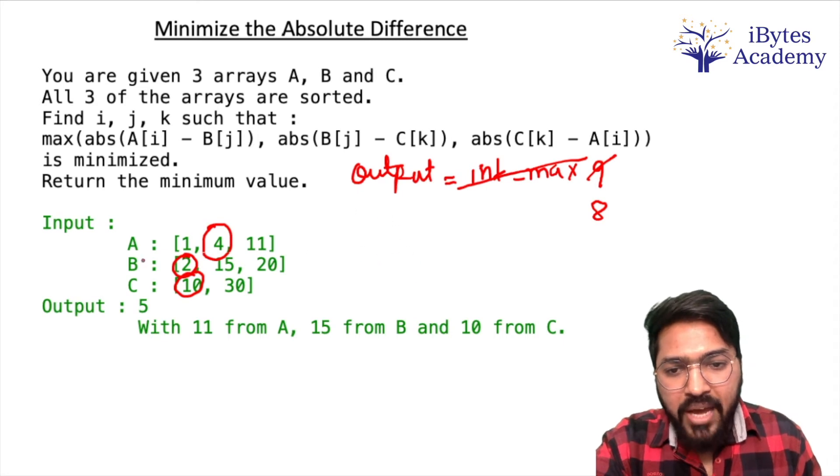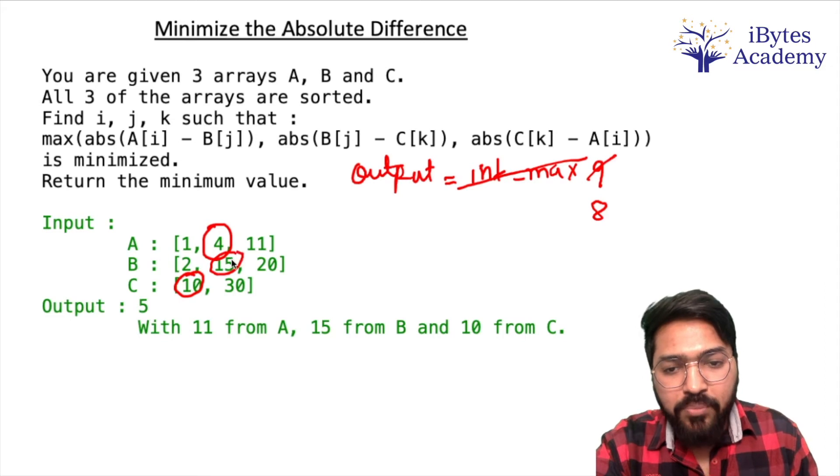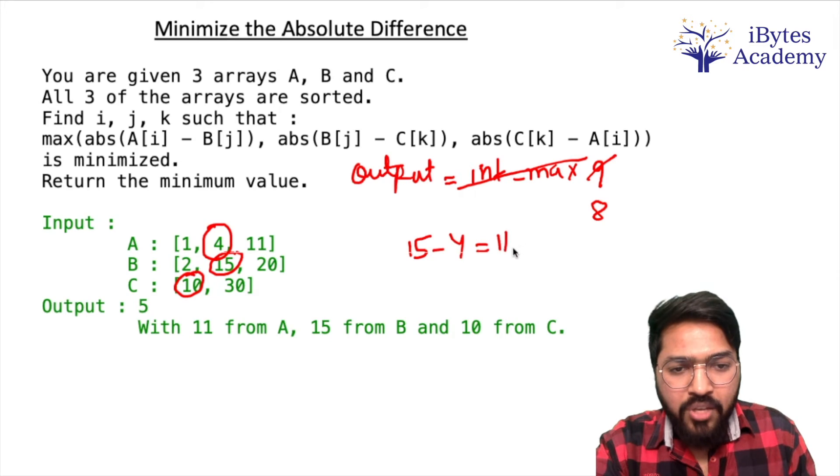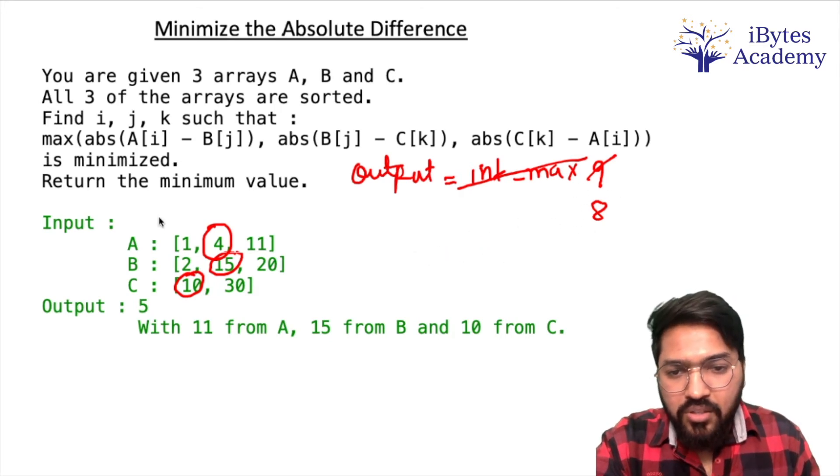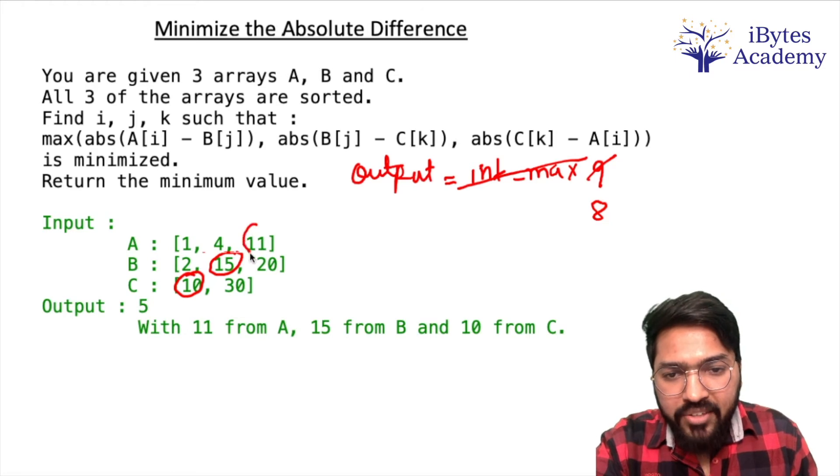Now among these three, what is the minimum? 2 is my minimum. So I will proceed to 15. Now it is going to be 15 minus 4, maximum minus minimum equals 11. Now 8 se 11 zyada hai, so I will not update. Then move 4 ahead to 11.